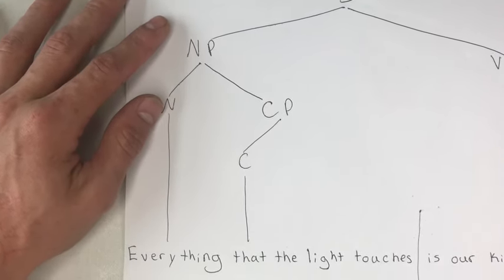Then we go to the predicate or verb phrase, which is relatively simpler. We start off our verb phrase with just the verb — open and close your brackets. Then the complement to the verb is another noun phrase — open and close the brackets. Within that noun phrase we have the determiner 'our' and the noun 'kingdom' — open your bracket, write 'noun space kingdom,' and close it off with a bracket. Let me zoom out so you can see the whole thing. So now we have our complete syntax tree for 'everything the light touches is our kingdom.'